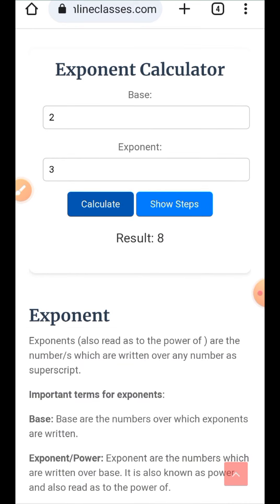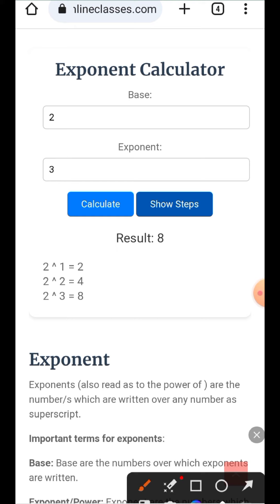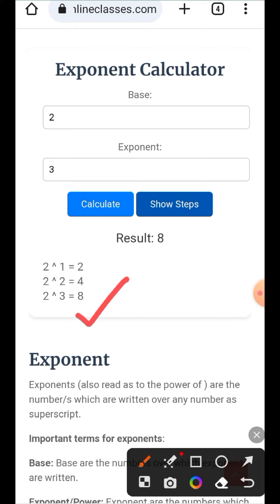If you click on the Show Steps button, it will display the calculation steps. For 2 to the power of 3, it multiplies 2 three times to get the answer of 8.